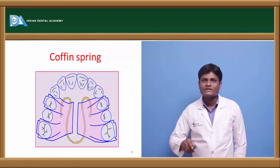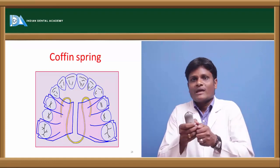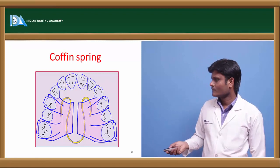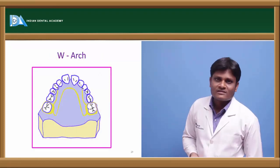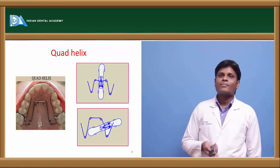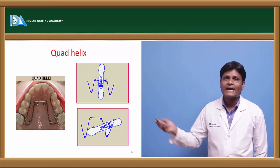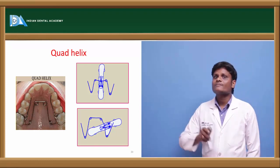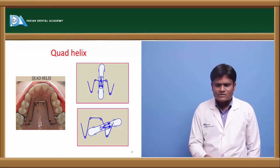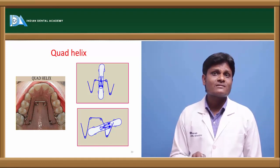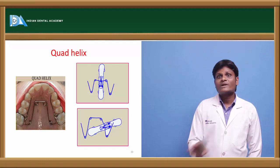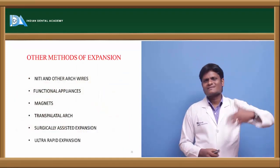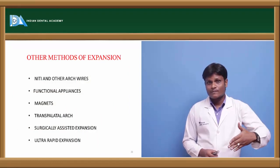A coffin spring can be incorporated in the midline of the split acrylic plate; by opening up the coffin spring and replacing it in the maxillary arch, it causes expansion. We can also use a fixed type of slow maxillary expander — the quad helix appliance — by opening up the loops or giving V-bends in the anterior bridge and posterior arms of the quad helix. This fixed appliance can also cause some alveolar bone bending, though opening of the suture with these appliances is very difficult.